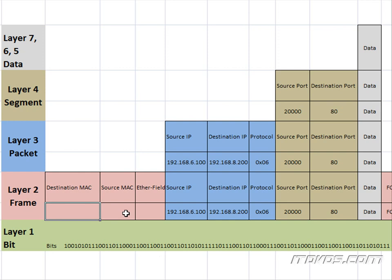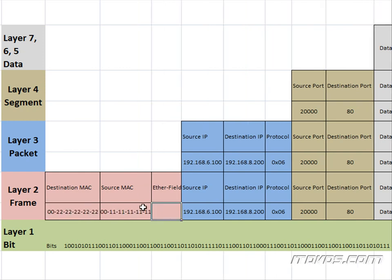We'll go ahead and add our destination and source MAC address. Also in our frame header, we're going to need an EtherType field value, and this tells Layer 2 what protocol has been encapsulated — what protocol our packet was using. Remember there was a protocol field that told Layer 3 what segment protocol was being used; in our case it was TCP, so we use 0x06. For our packet it's using IP version 4, and IP version 4 is 0x0800. These numbers are standardized for protocol and EtherType field. It's not necessary to memorize the EtherType and protocol values.